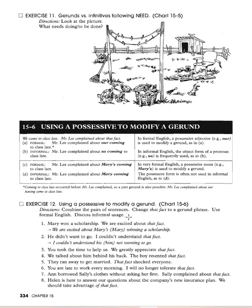Practice — using a possessive to modify a gerund. Combine the pairs of sentences; change 'that fact' to a gerund phrase. Use formal English and discuss informal usage. 'Mary won a scholarship. We are excited about that fact.' → 'We are excited about Mary's winning a scholarship.' 'He didn't want to go. I couldn't understand that fact.' → 'I couldn't understand his not wanting to go.' 'You took the time to help us. We greatly appreciate that fact.' → 'We greatly appreciate your taking the time to help us.' Formal uses possessive; informal drops it.